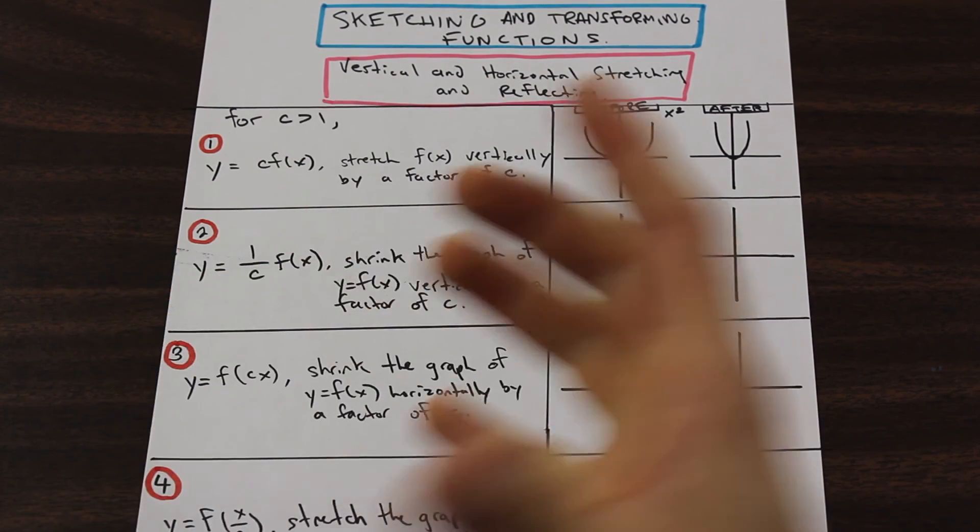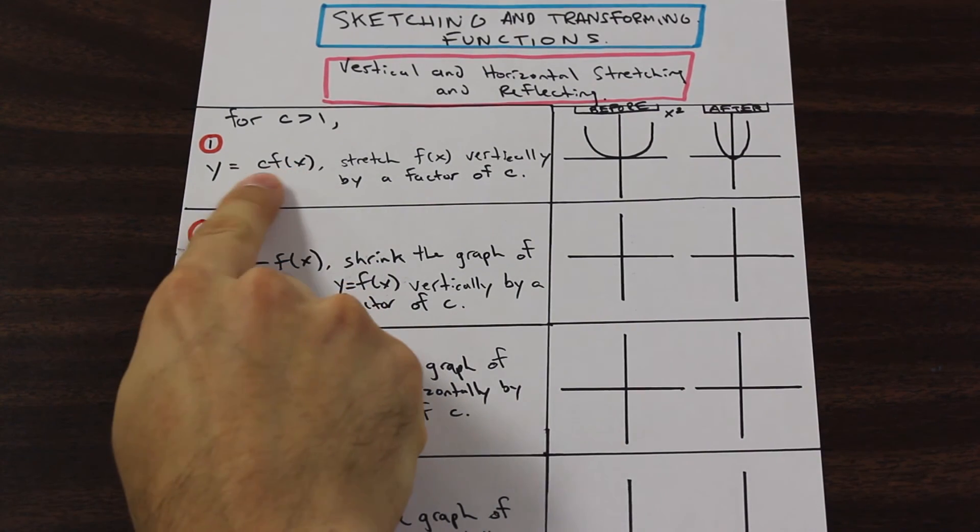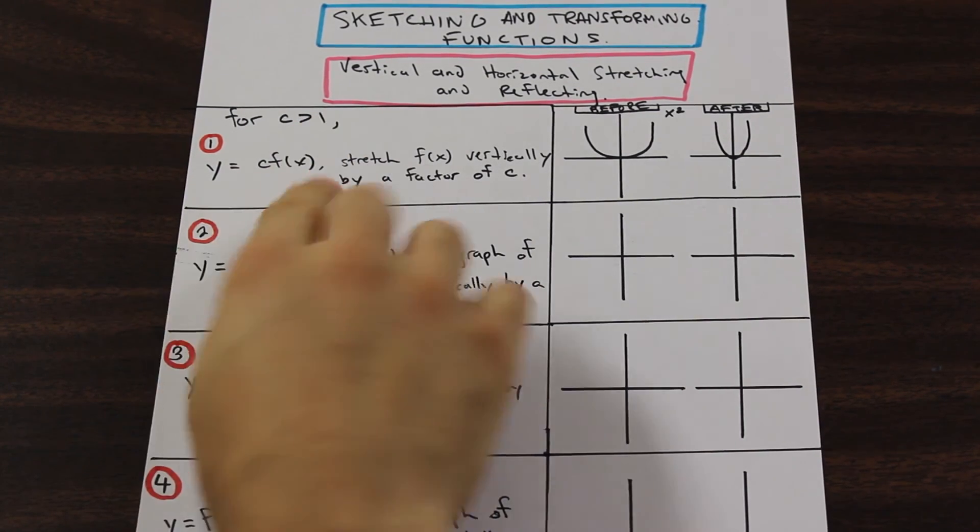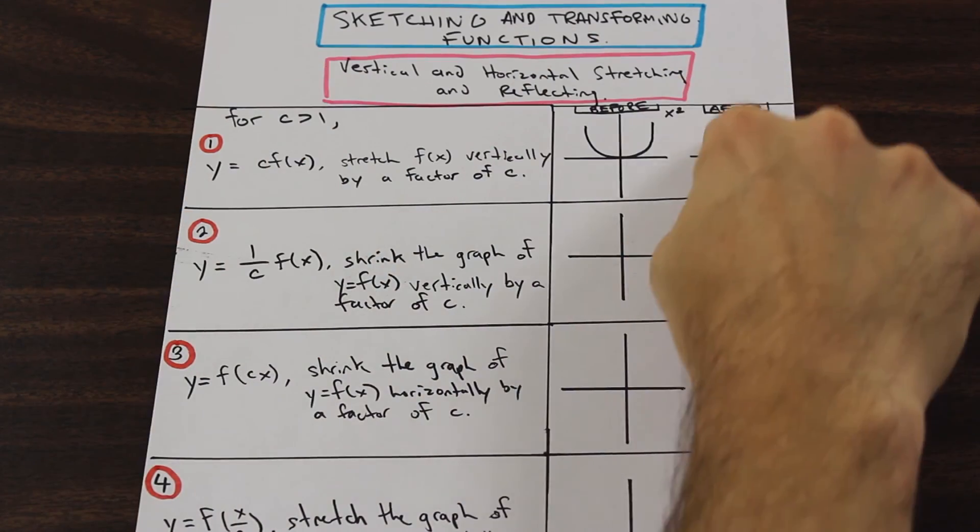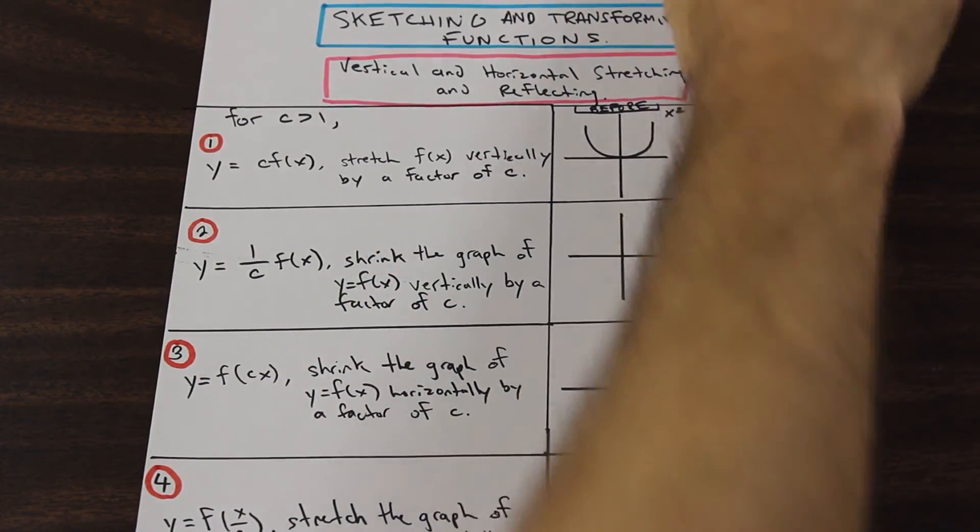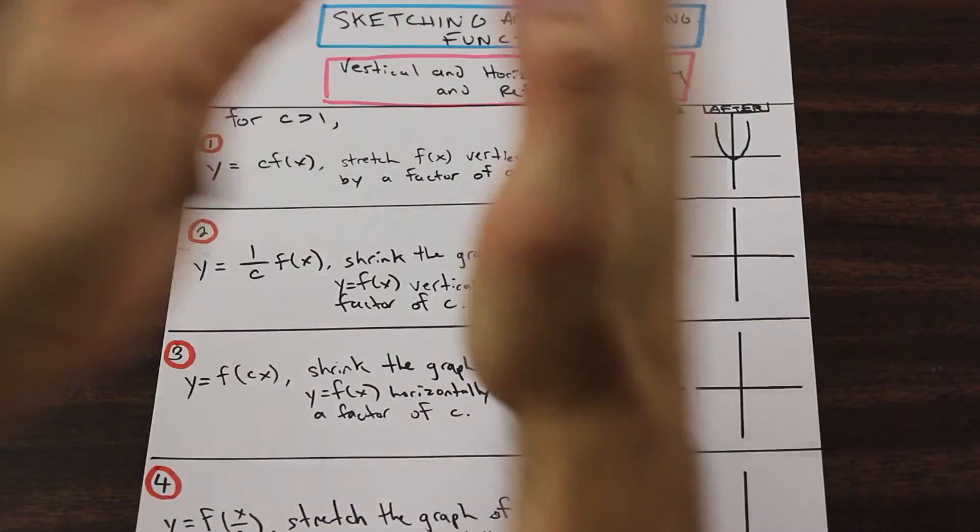For example, in the first one, if you just take a look at it logically, we multiplied the function, and the function became bigger, right? So the numbers in y are going up faster, which is why the function is shrinking this way.